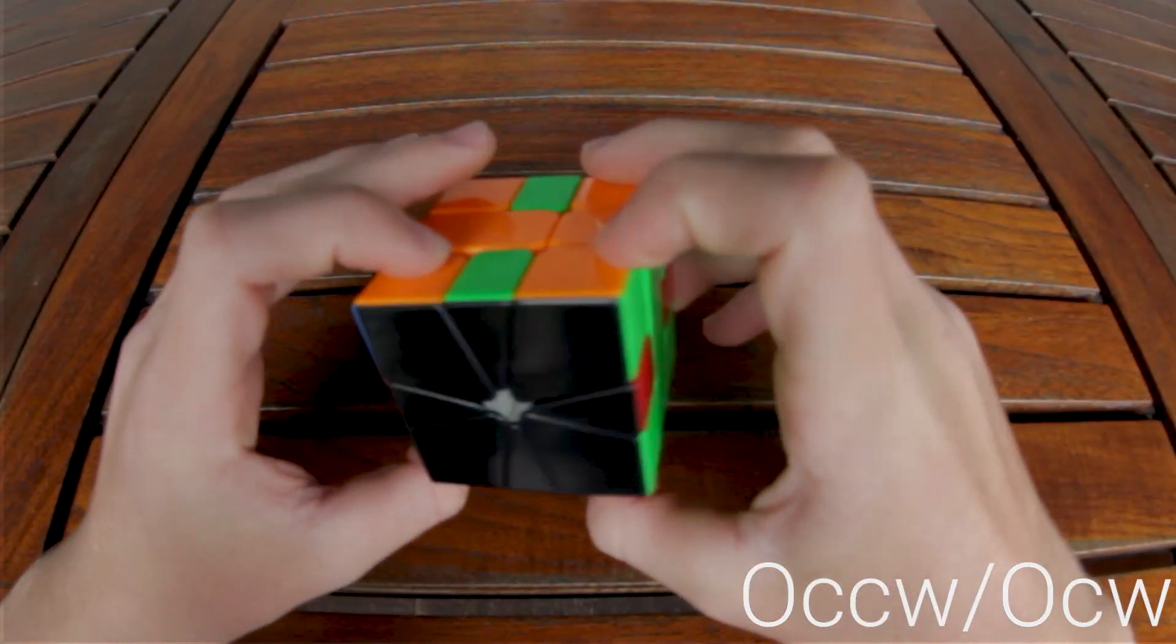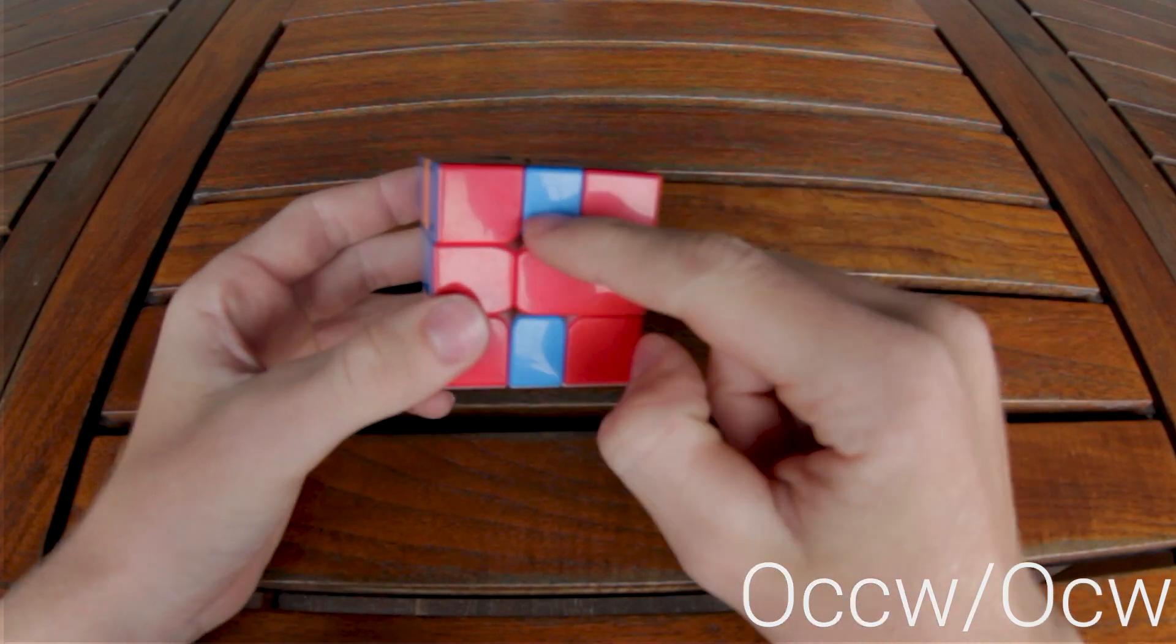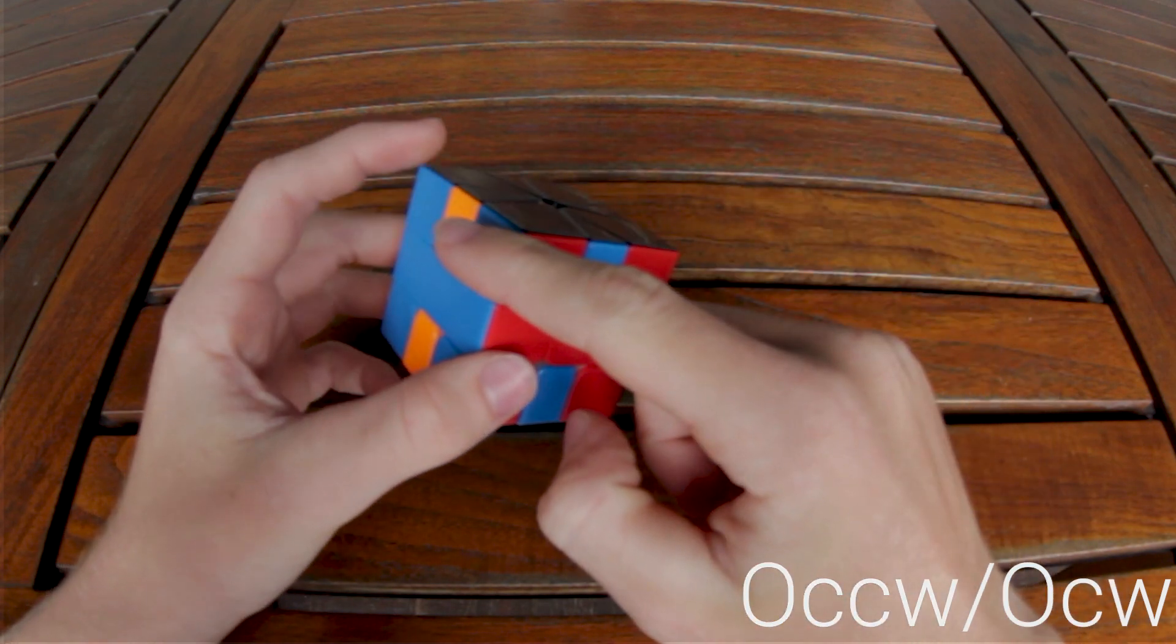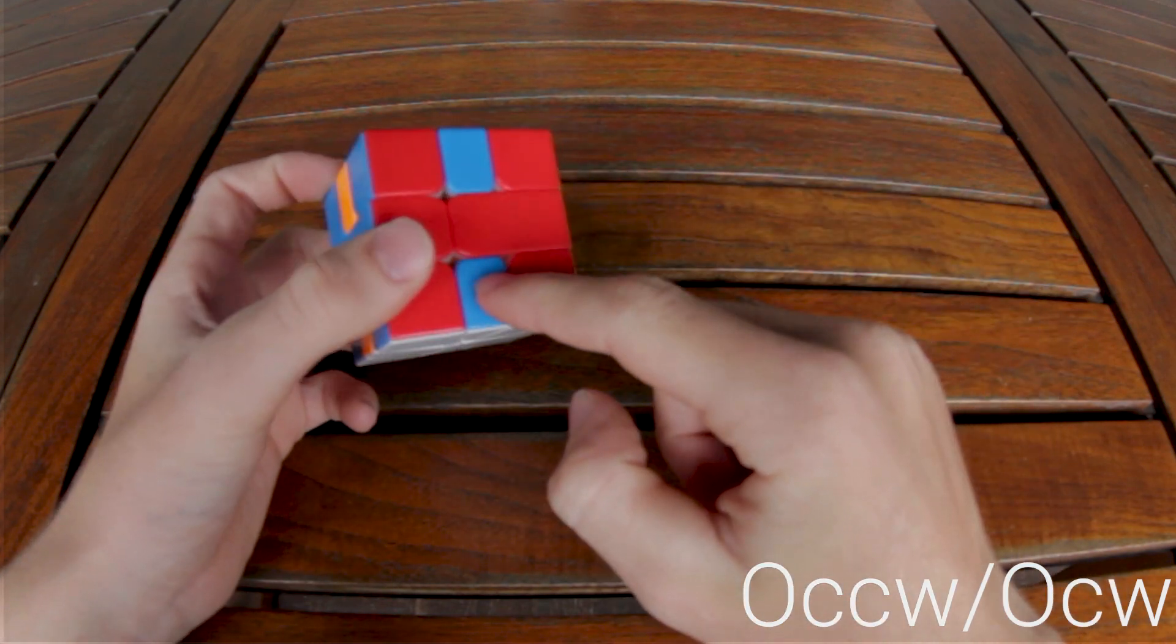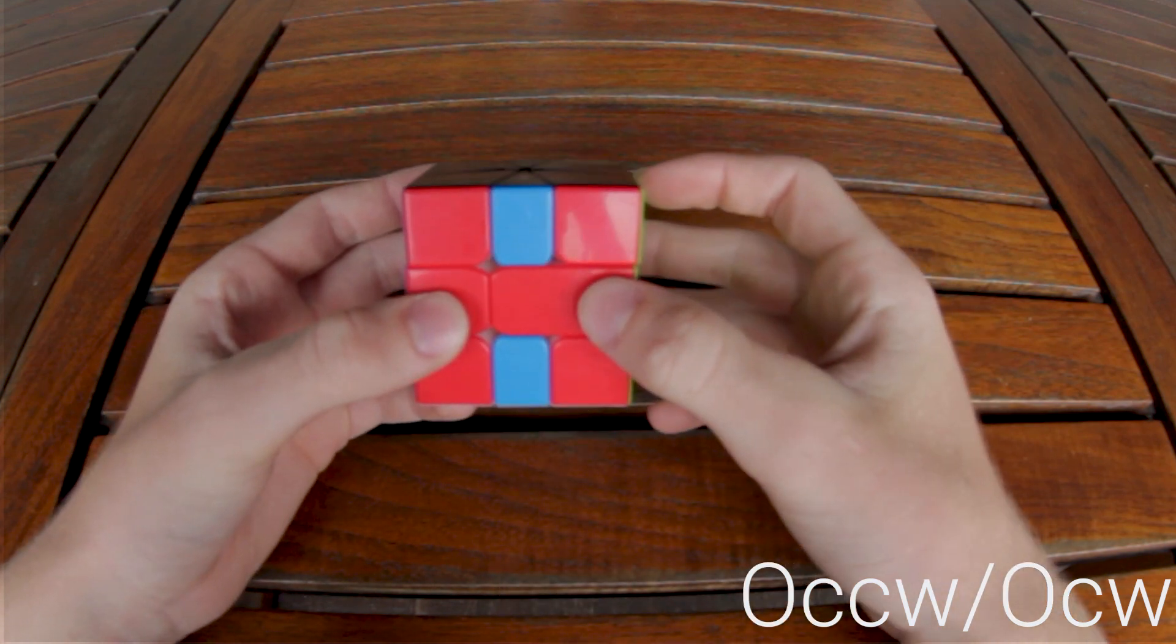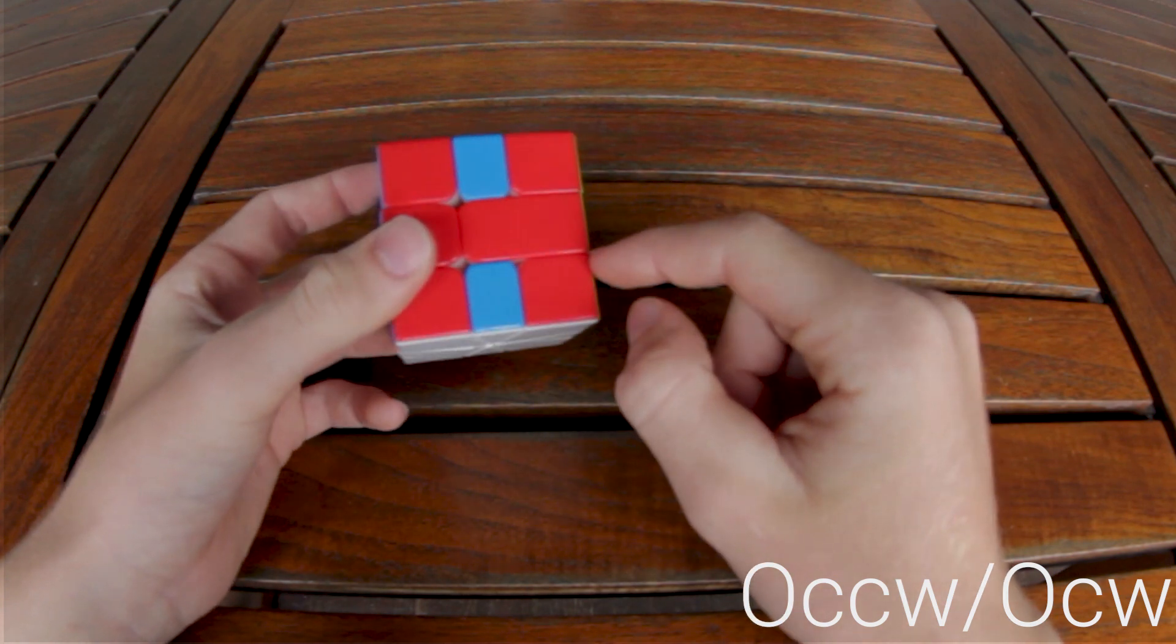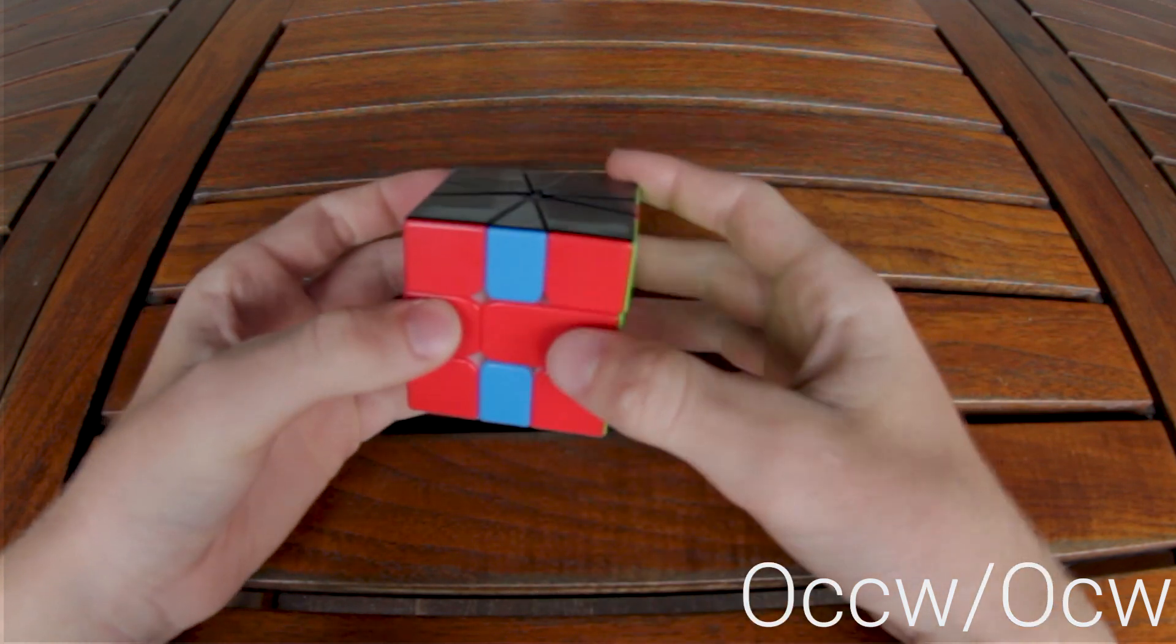The next case is opposite directional O, O. You can recognize this by this edge color going to the same direction as what this edge color is going to. So they're both going to the left in this case. And then my D move, my first D move will be a D because that's the opposite direction of where this needs to go.